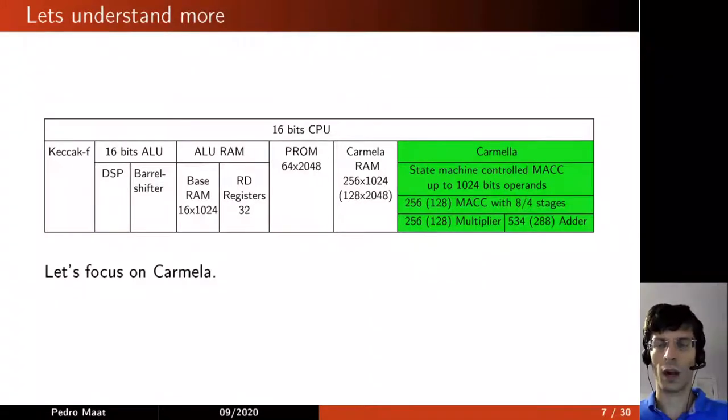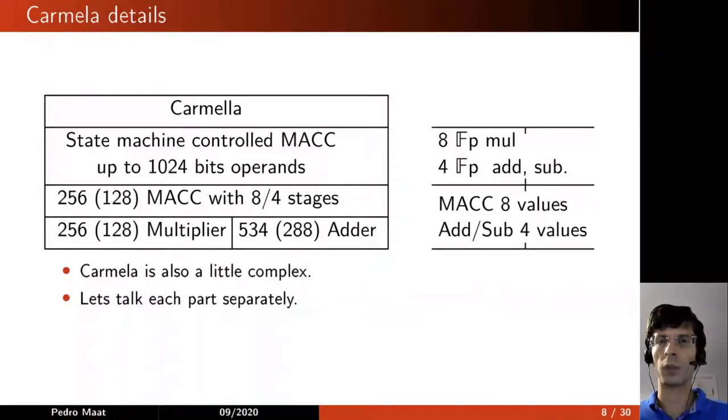So let's start focusing on Karmakar. Karmakar is built around a multiplier and an adder that builds the MAC, the multiplier accumulator. The multiplier is 256 or 128 bits, depending on the version of Karmakar. We have two versions. The 256-bit version of Karmakar is made for the 7 series of FPGAs of Xilinx that use rectangular multipliers. And the 128-bit version of Karmakar is for smaller units that have square multipliers like the Spartan 6.